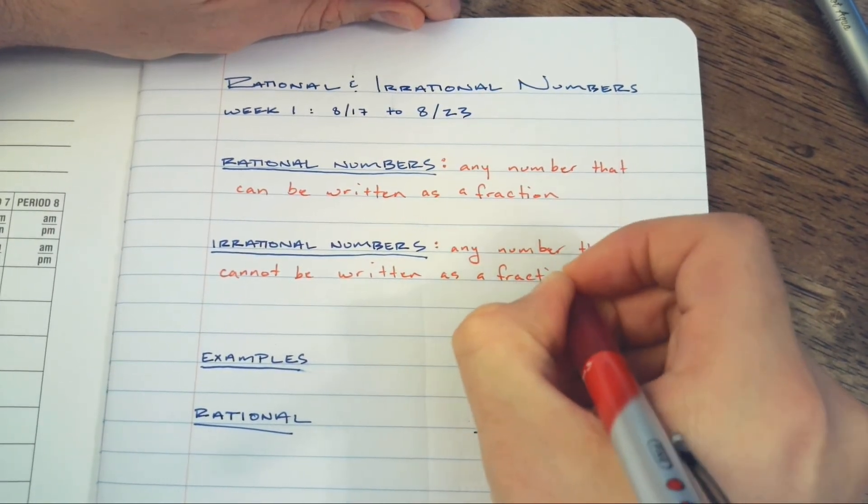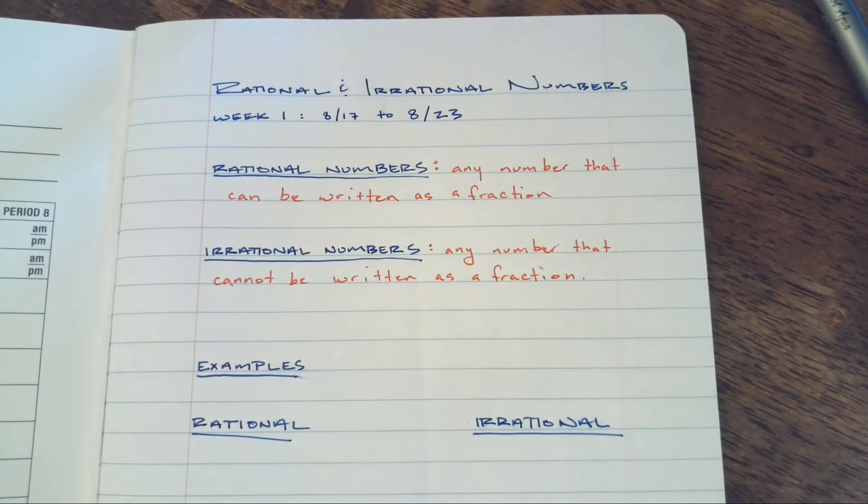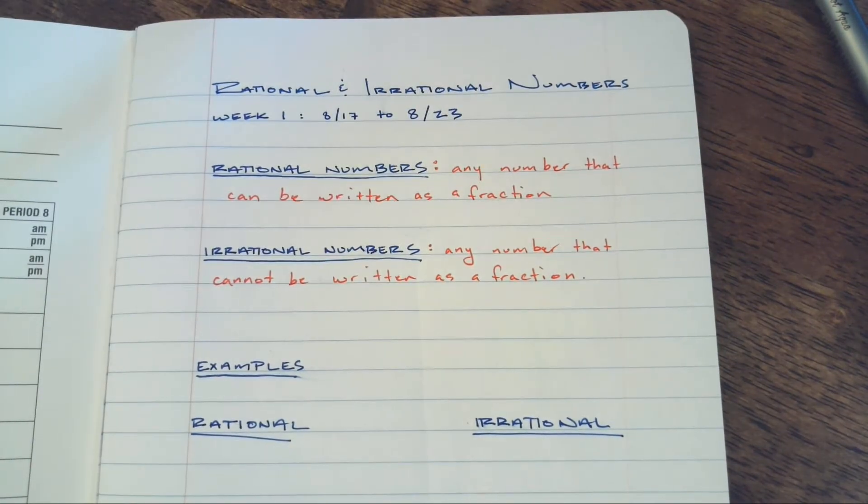Now functionally, what does this mean? Well, these are the two broadest categories of numbers. Any number can be put into one of these two categories. So rational numbers comprise most numbers - most numbers can be written as a fraction.